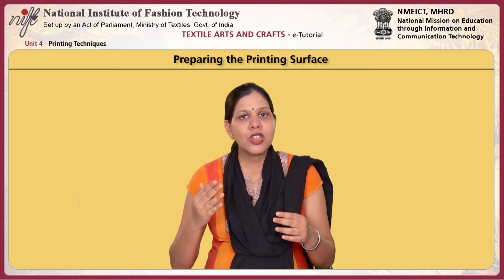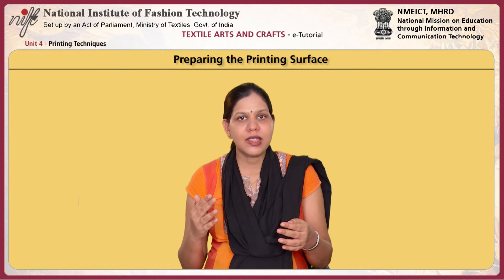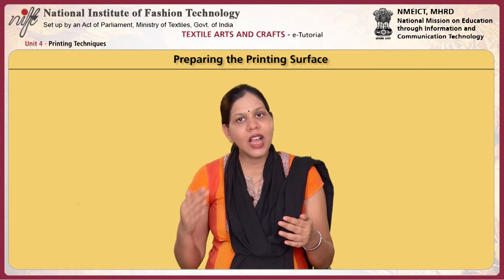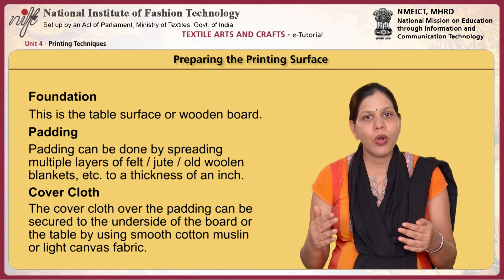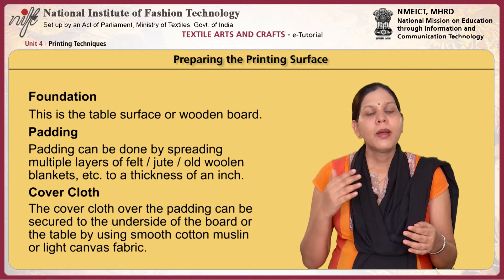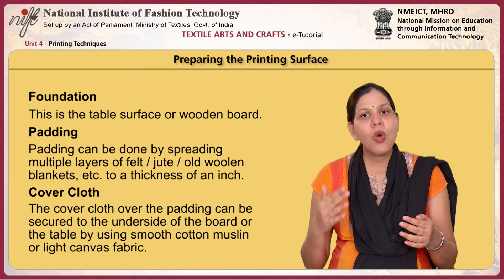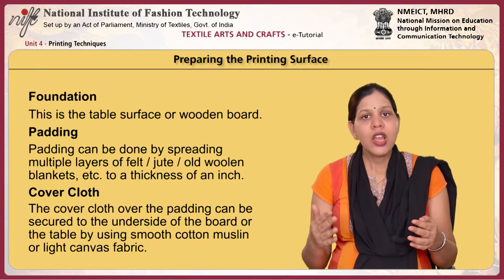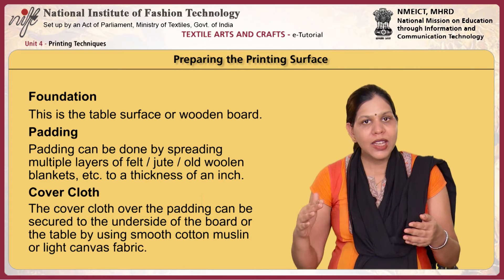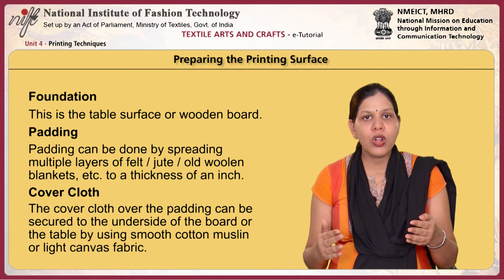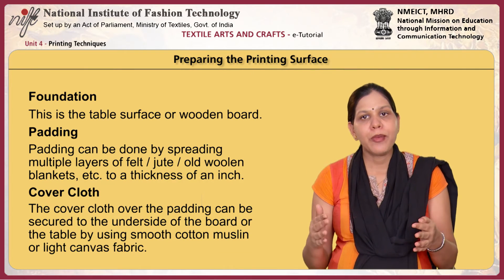The next step is to prepare the printing surface — the table — consisting of three layers: foundation, padding and cover cloth. Padding can be done by spreading multiple layers of felt, jute, old woollen blanket, etc., to a thickness of an inch. The cover cloth over the padding can be secured to the underside of the board or table using smooth cotton muslin or light canvas fabric.